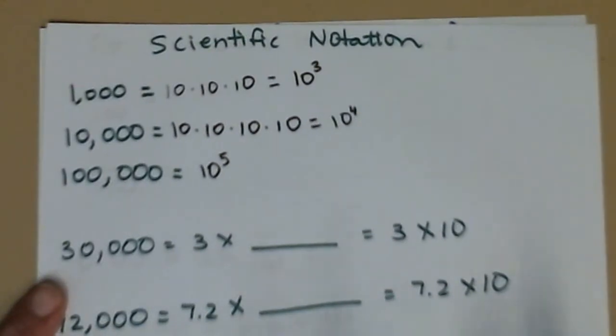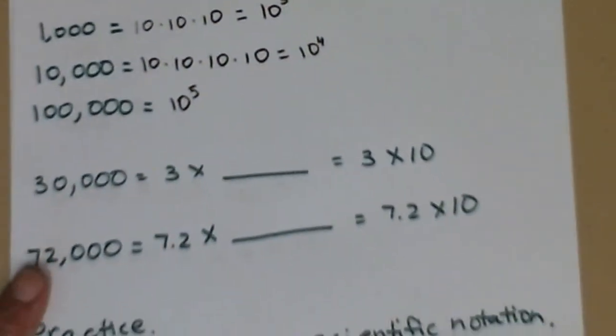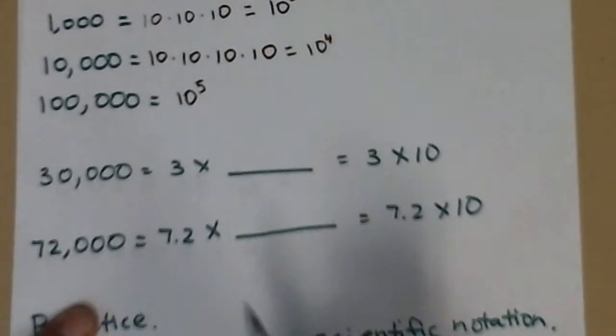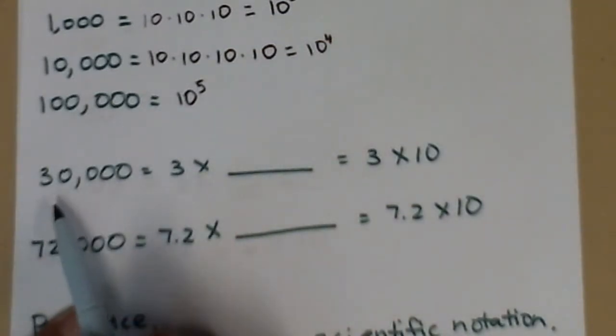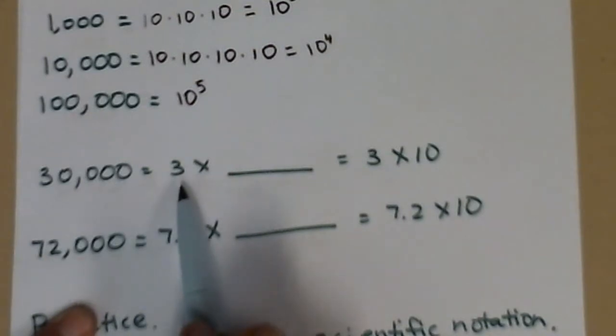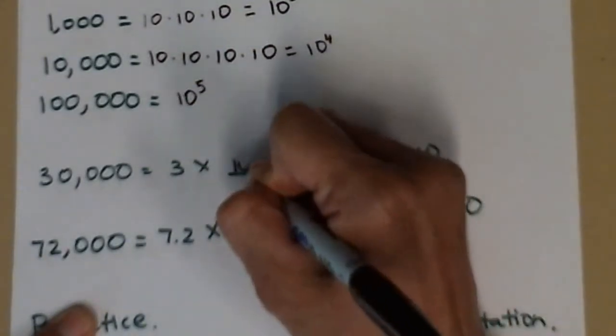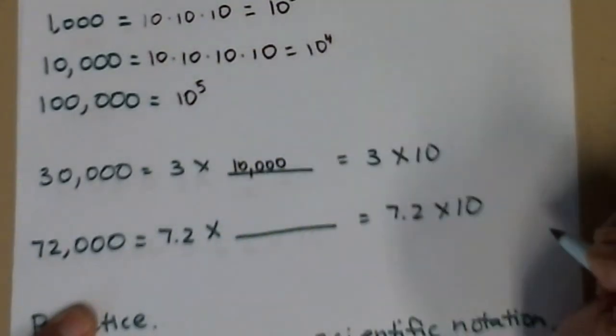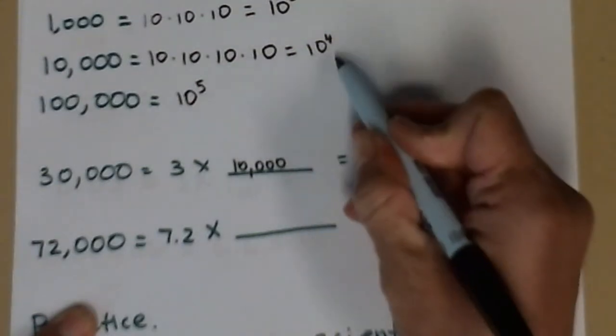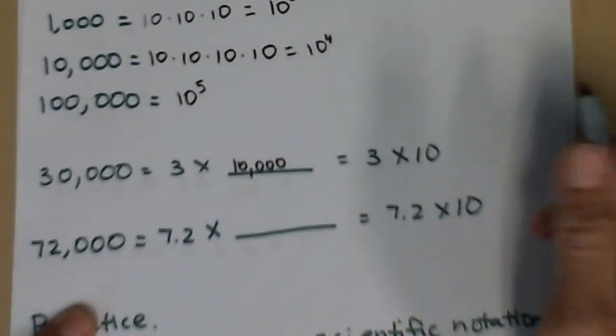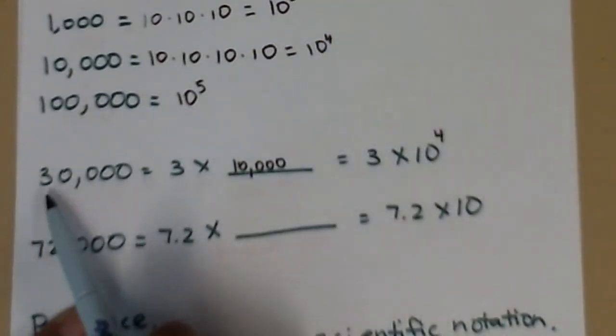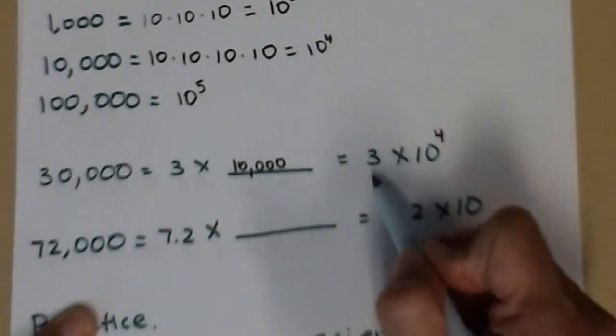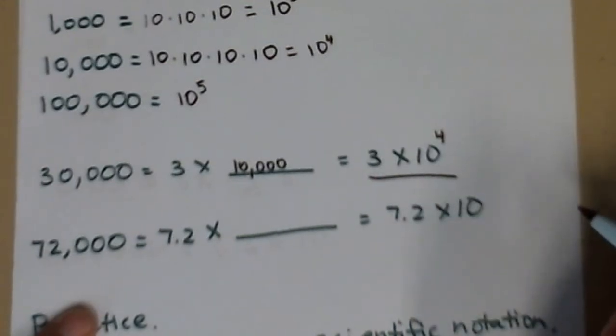So with that as a basis, let's take a look at rewriting 30,000 in scientific notation. So first off, 30,000 is the same thing as 3 times 10,000. But 10,000 is the same thing as 10 to the fourth. So in scientific notation, 30,000 is the same thing as 3 times 10 to the fourth.